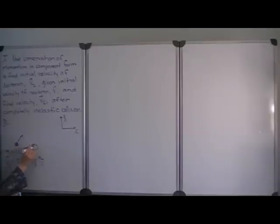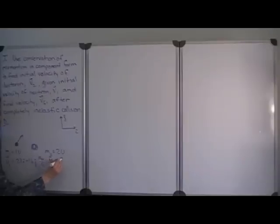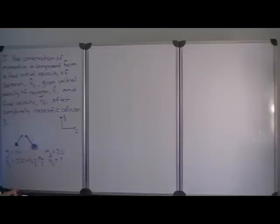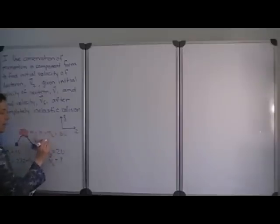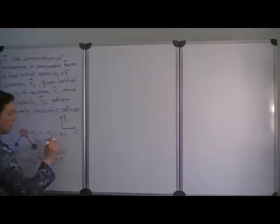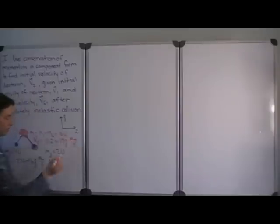We have the second mass, which is the deuteron. The deuteron has a mass of 2 atomic units. We do not know its initial velocity — that's what we're trying to find, so we can't sketch it accurately. In a completely inelastic collision, the masses combine, so we have a final mass equal to the sum of mass 1 and mass 2, which is 3 atomic units. The final velocity after this completely inelastic collision is 11 in the I direction and 19 in the J direction, in megameters per second. So it has a larger J component than I component.